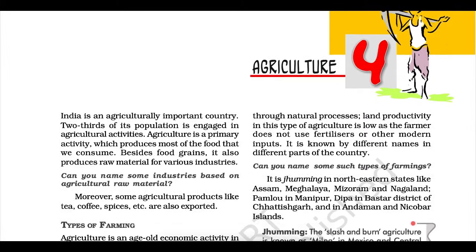Rubber is an equatorial crop, but under special conditions, it is also grown in tropical and subtropical areas. It requires moist and humid climate with rainfall of more than 200 cm and temperature above 25 degrees centigrade. Rubber is an important industrial raw material. It is mainly grown in Kerala, Tamil Nadu, Karnataka, and Andaman and Nicobar Islands, and the Garo Hills of Meghalaya.